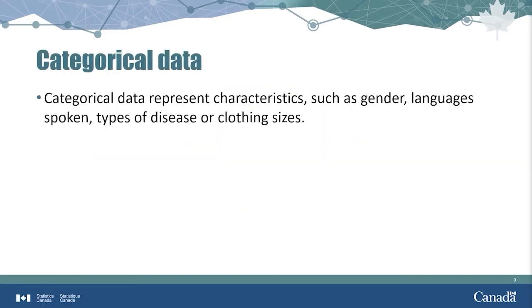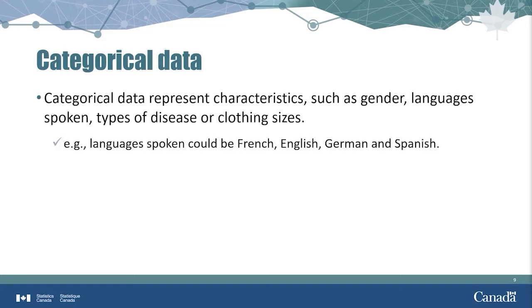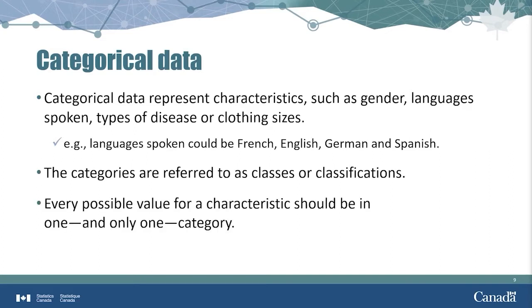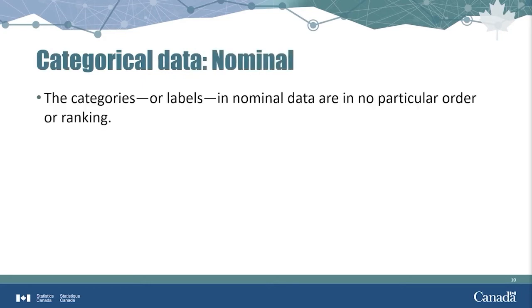Categorical data represent characteristics such as gender, languages spoken, type of disease, or clothing sizes. For example, the languages spoken by a particular person could be French, English, German, and Spanish. The categories are referred to as classes or classifications. Every possible value for a characteristic should be in one and only one category. When the categories have no inherent order, the data are called nominal. The data values in this situation are labels. Examples of categories are types of diseases or languages spoken.